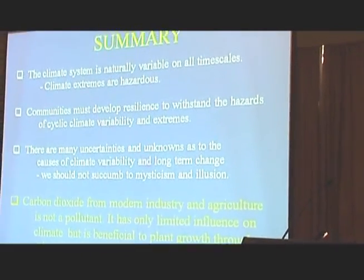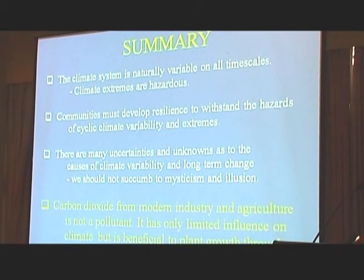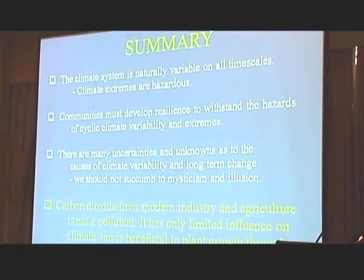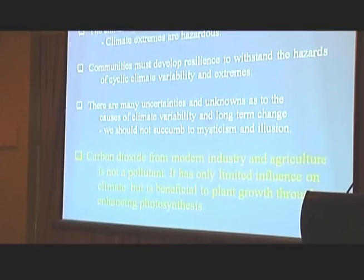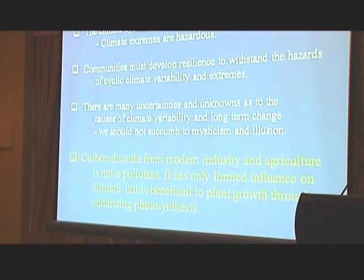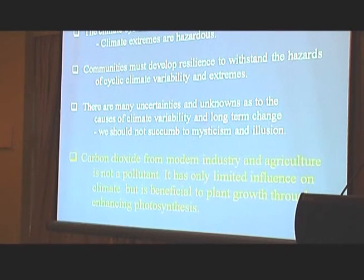To summarise: the climate system is naturally variable on all timescales. Climate extremes are hazardous and we've got to prepare for them. Communities must develop resilience to withstand the hazards of cyclical climate variability and extremes — not only drought and flood periods, but a whole range of climate extremes. If we drop back into a cooler period with shorter growing seasons, it's serious. There are many uncertainties and unknowns as to the cause of climate variability and long-term change. We should not succumb to the illusion that we understand it and that it's all about CO2. It's about a whole range of other things. Carbon dioxide from modern industry and agriculture is not a pollutant — it has limited influence on climate but is beneficial to plant growth through enhancing photosynthesis.